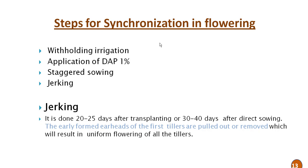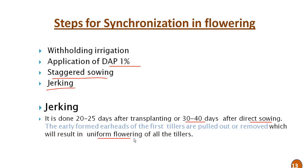Steps for synchronization of flowering: synchronization in flowering of the male and female parent is crucial for hybrid seed set. Steps include: first, withholding irrigation; second, application of DAP at 1%; third, staggered sowing; and fourth, jerking. Jerking is done 20 to 25 days after transplanting or 30 to 40 days after direct sowing — the early firm earheads of the first tillers are pulled out or removed, which results in uniform flowering of all tillers.